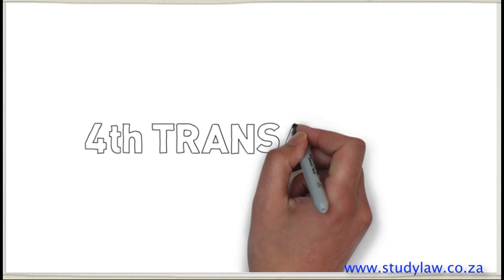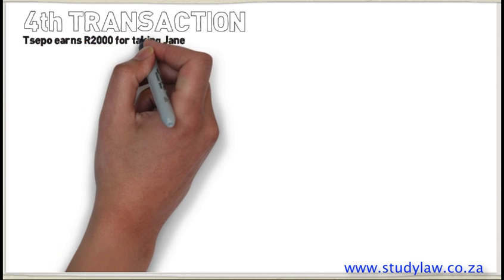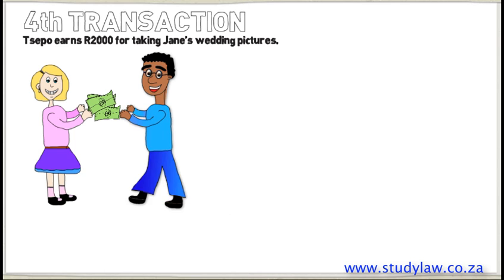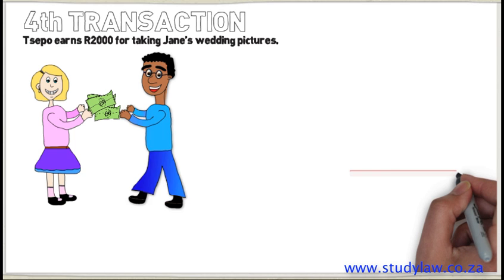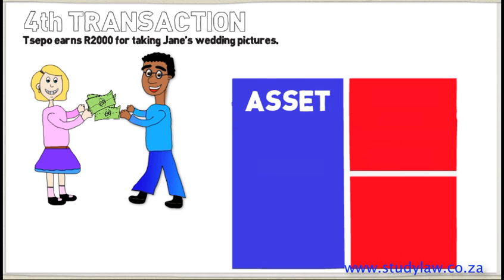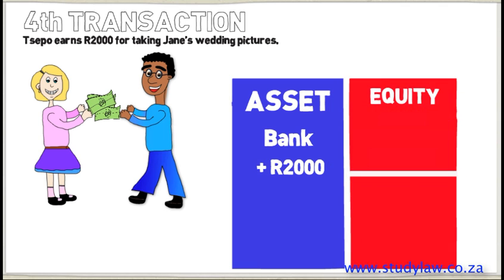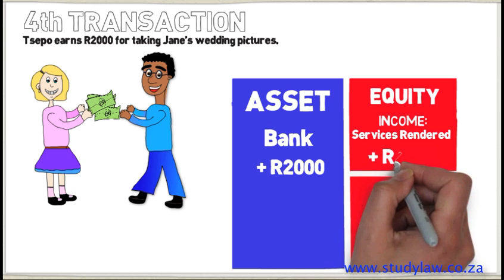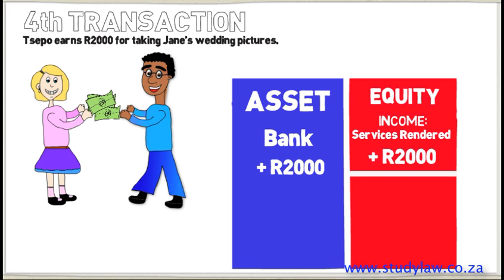The fourth transaction is when Seppo's business provides the service of taking photos at Jane's wedding and earns R2,000. When Seppo's company gets paid, the money goes into the company's bank account, recorded in the Bank account. Bank is a type of asset and will increase by R2,000. The second account affected is Income — by providing a service and taking the photographs, the company has made an income. Income is a type of equity account and will increase by R2,000, because income is good for the business.